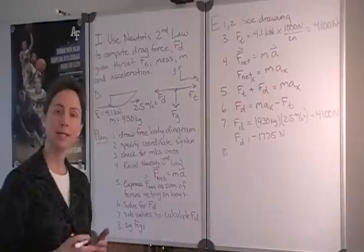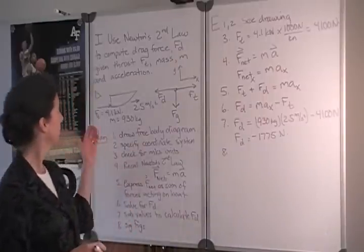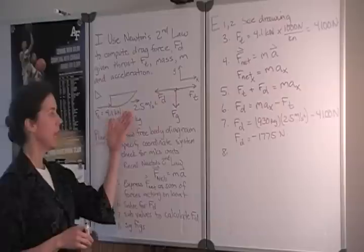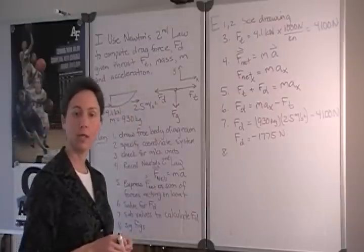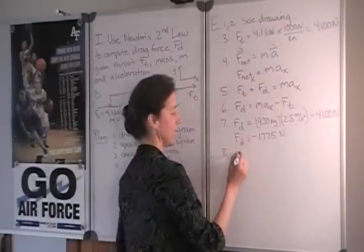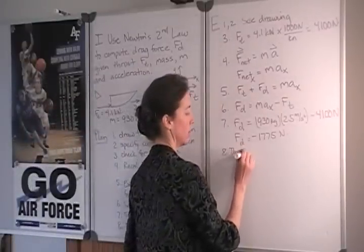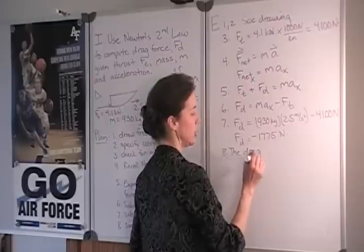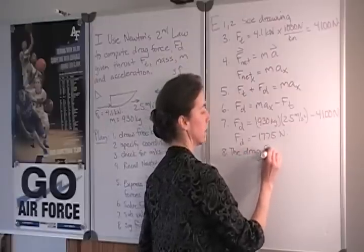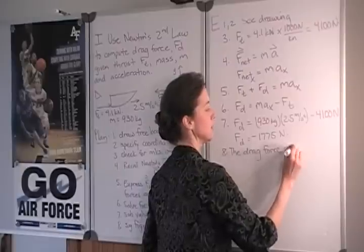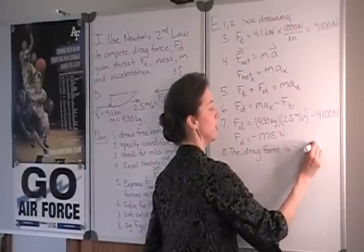Now if we consider how many significant figures to report, let's go back to our given values. And the least number that we're given is 2. So let's round this answer to the nearest two significant figures. So the drag force is minus 1800 newtons.